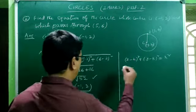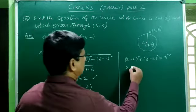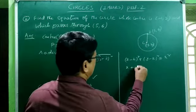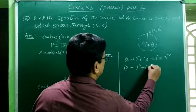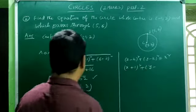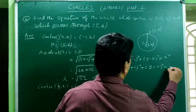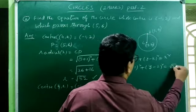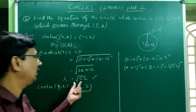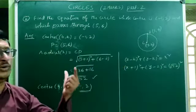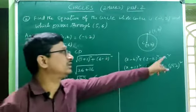Substituting: h = −1 and k = 2, so (x−(−1))² + (y−2)² = (√52)². That gives (x+1)² + (y−2)² = 52.